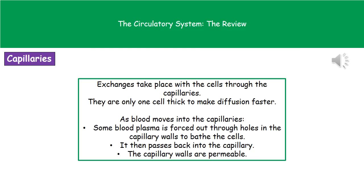The third and final type of blood vessel we need to know about are the capillaries. Any exchanges taking place with the cells occur through the capillaries. One of their adaptations to make this happen faster is that they're only one cell thick, so diffusion happens very quickly. As blood moves into the capillaries, some of the blood plasma is forced out through tiny holes in the capillary walls, bathing the surrounding cells. Exchanges take place — picking up carbon dioxide, releasing oxygen — and then the blood plasma passes back into the capillary. The whole reason it can do this is because the capillary walls are permeable.